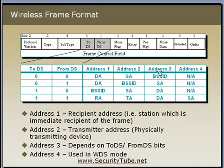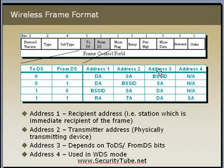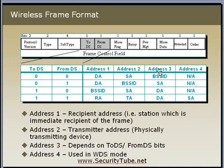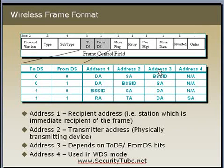The sequence of the three addresses follows a simple rule: Address 1 is always the destination address, Address 2 is always the source address, and Address 3 is generally the host or BSSID address. In To DS frames — sent by the client to the AP — Address 1 is the BSSID (the next destination, which is the AP), Address 2 is the client's MAC (source), and Address 3 is the gateway's address (the final destination).